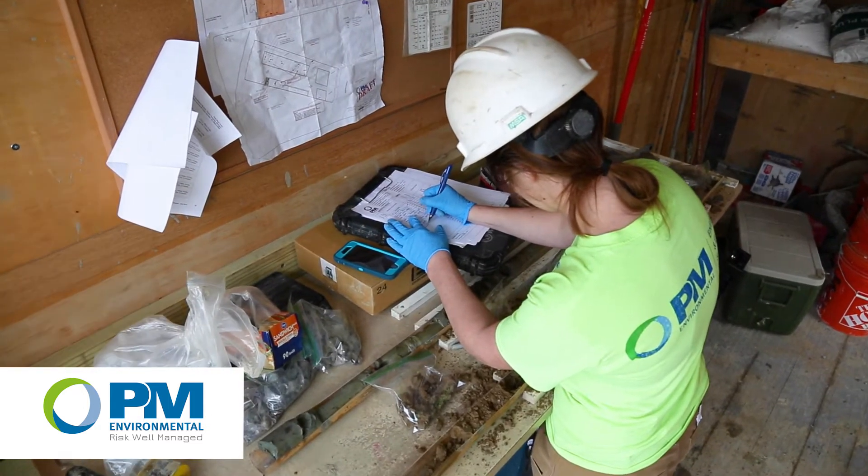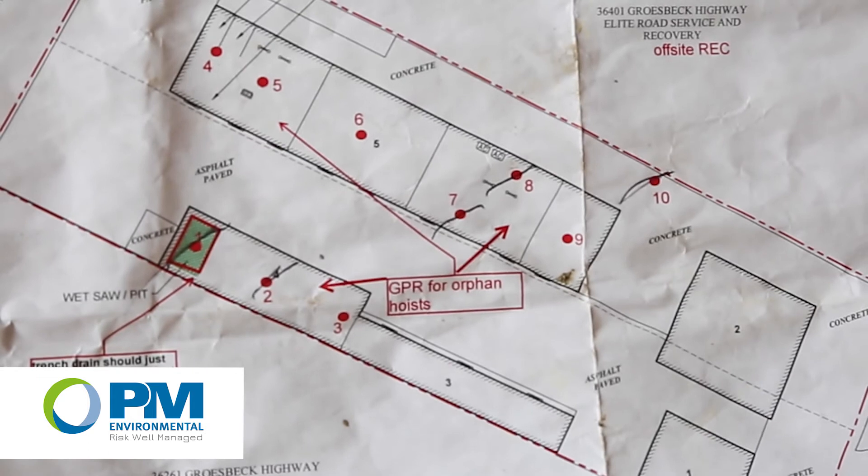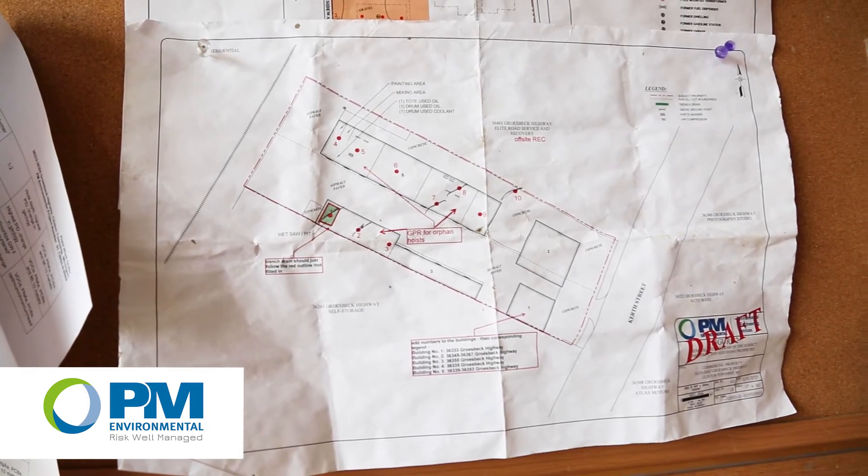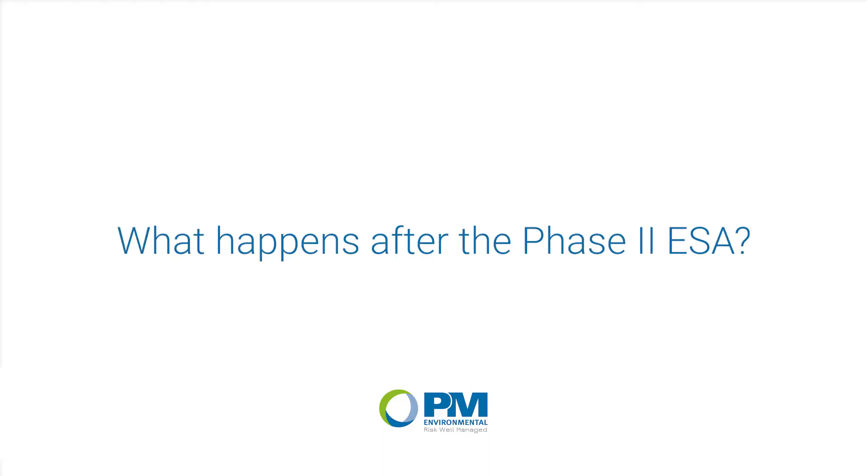For groundwater sampling, we will send down a pump and then collect groundwater samples. There's also soil vapor within the subsurface, right below a building foundation. What we do is test to see what levels that vapor cloud is at, and if that vapor cloud exists under a building it could potentially migrate up into the breathing zone and cause a problem.